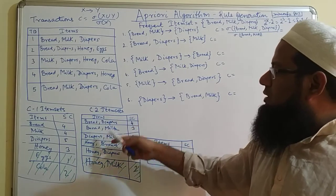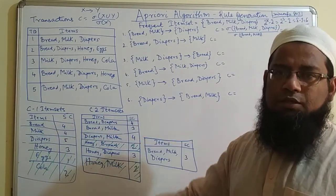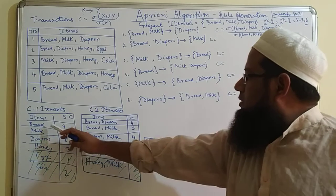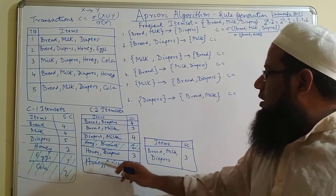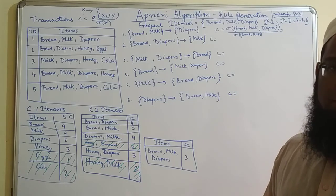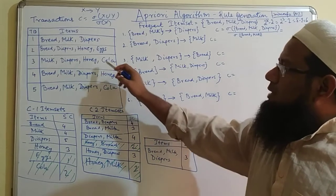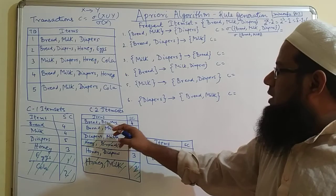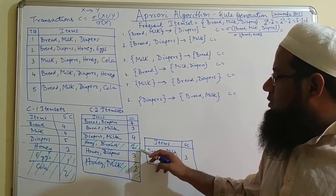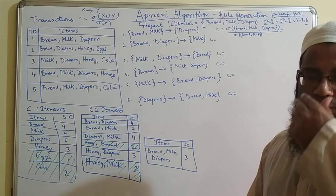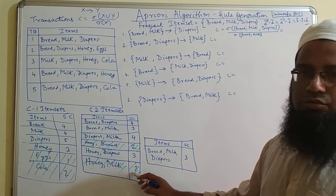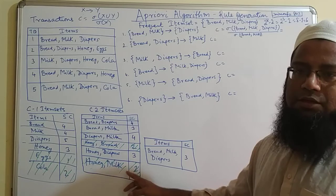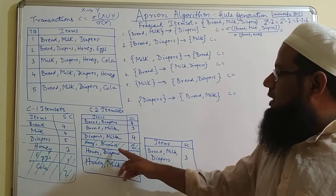How did we find the candidate two-item set? By doing the combination of each item with all the other items with no duplicates — so bread with diaper, bread with milk, and all the different combinations. We then calculated the support count again by scanning the transaction database. We got support counts of four, three, four, two, three, two. Wherever the support was less than three, those item sets were removed. So honey and milk, with a support of two, and honey and bread were removed.